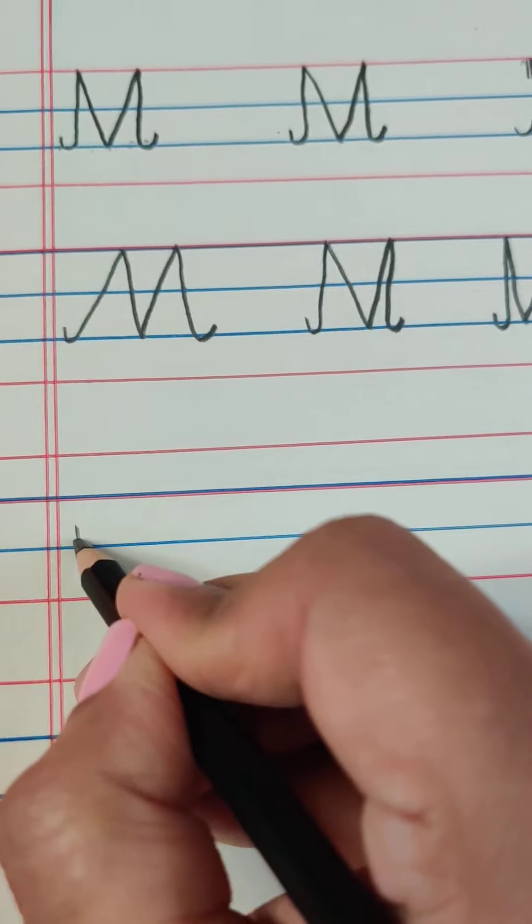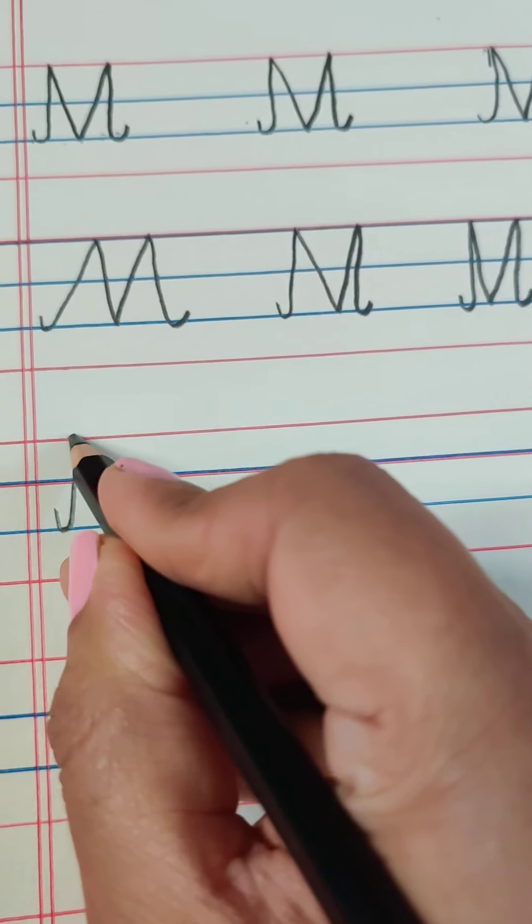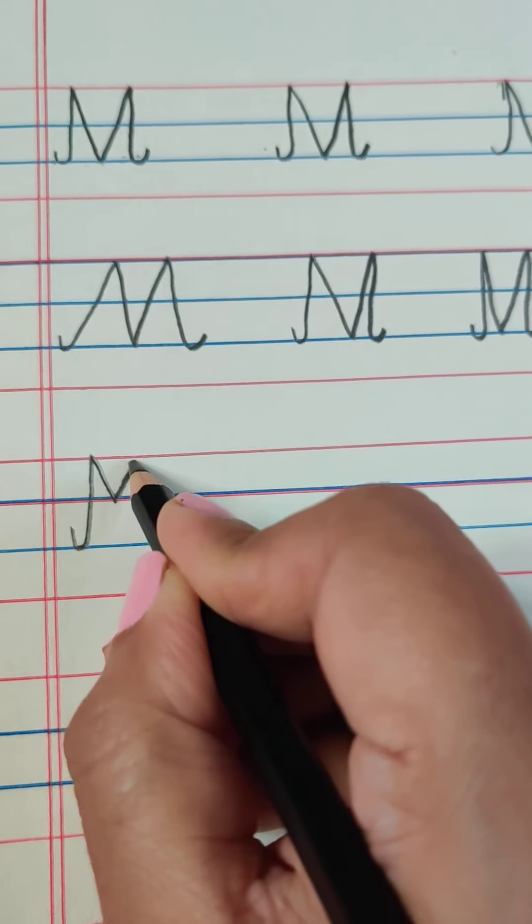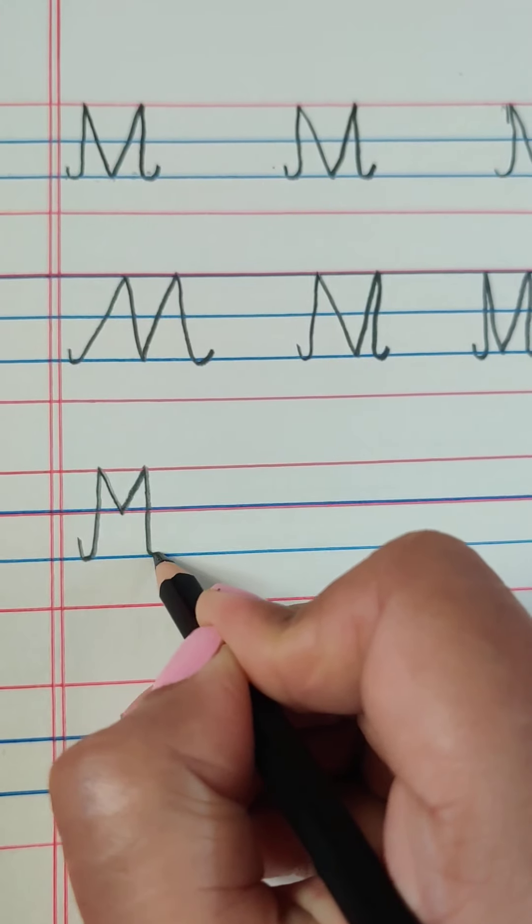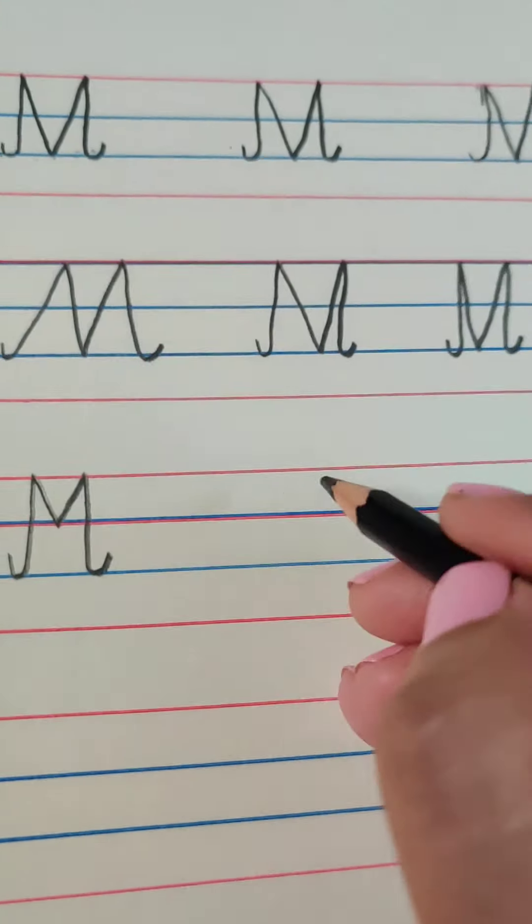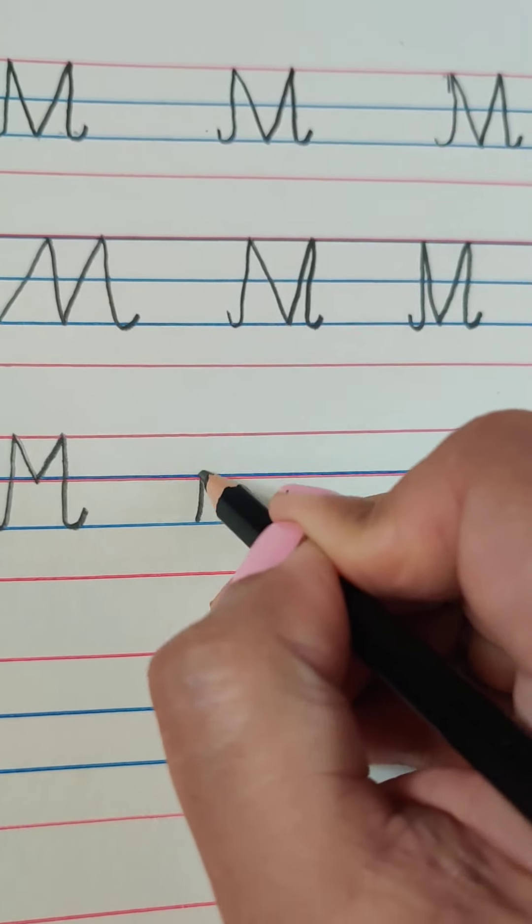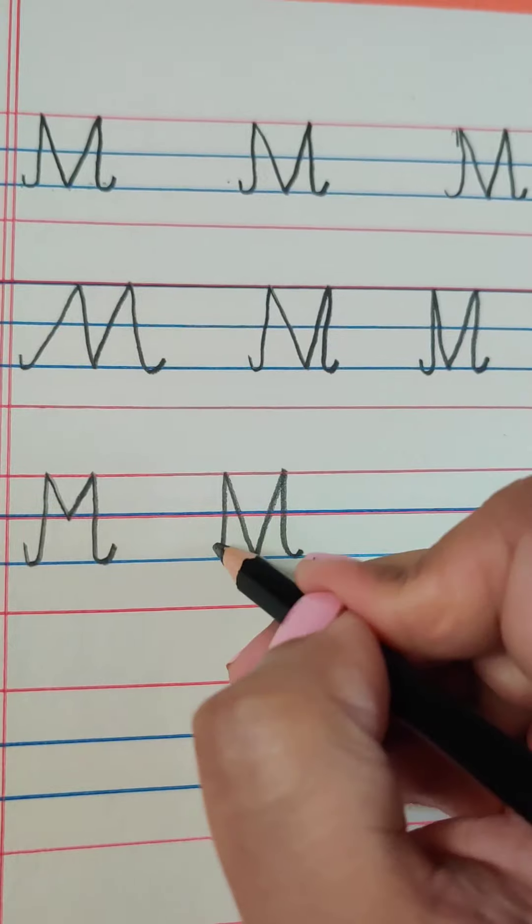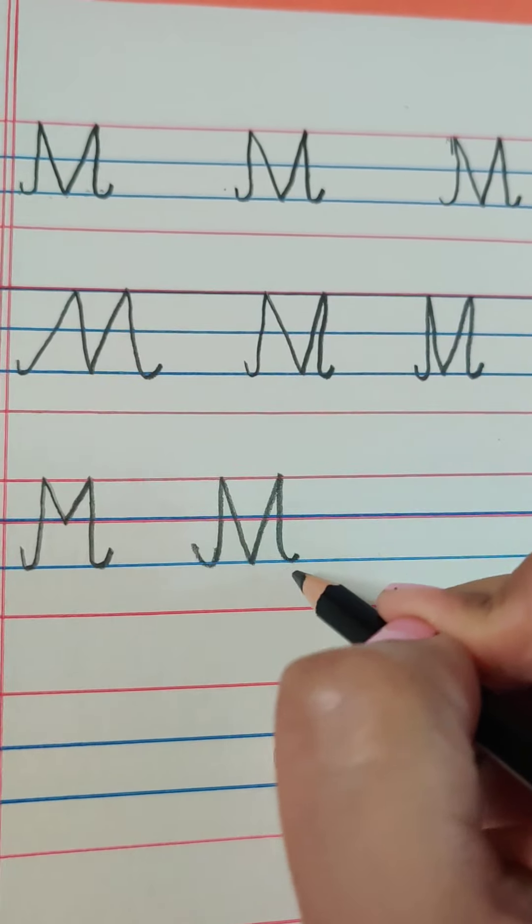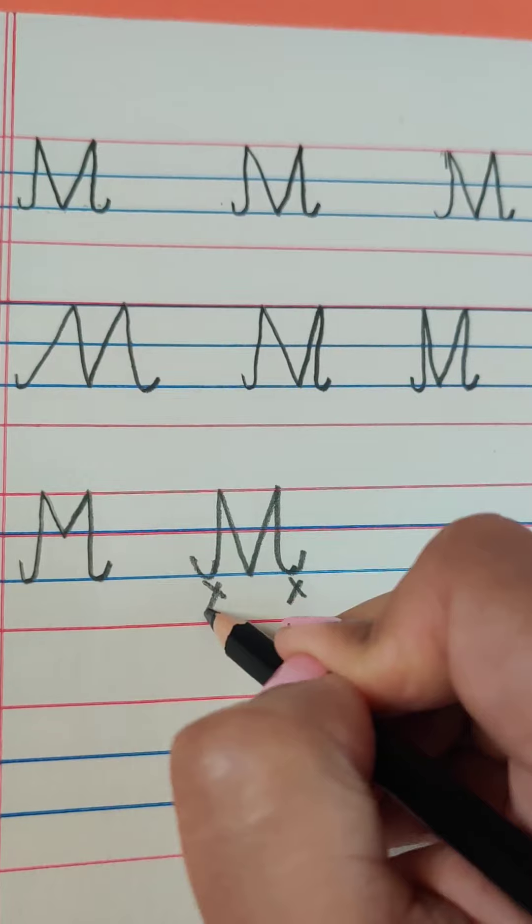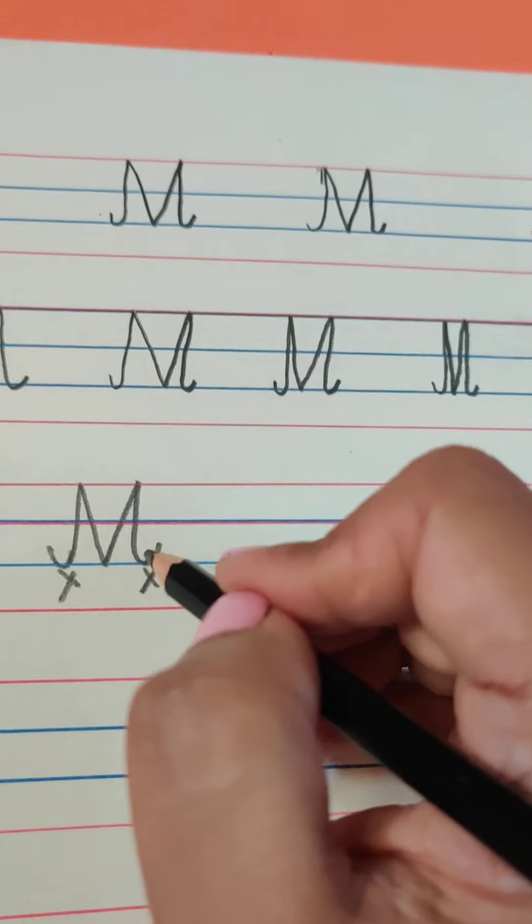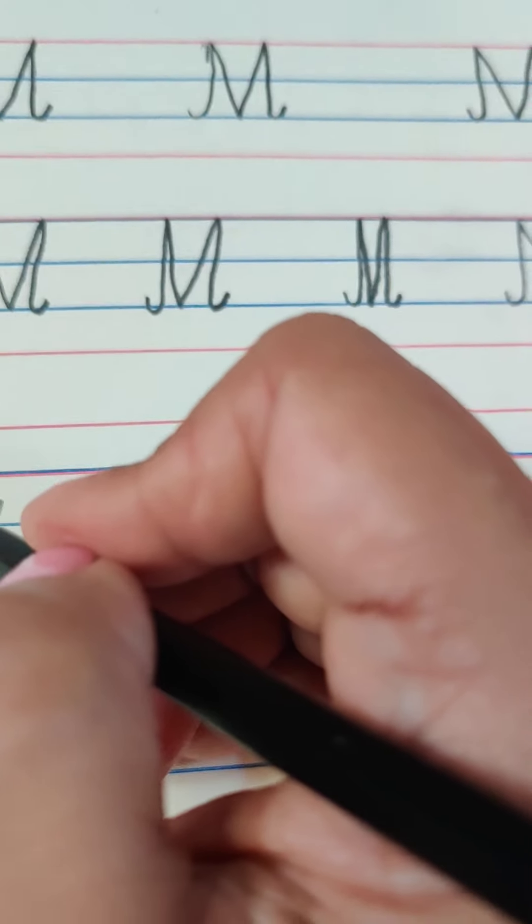Now, one more mistake is, some children do not come till the bottom line and they make M like this. And some children, what they do, they just make like this and after that, they pick up their pencil and make the curves, which is wrong. You will not pick up the pencil while making this. Do not pick up the pencil.